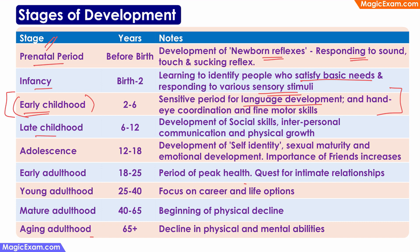In late childhood, the child starts to develop social skills and interpersonal skills, learning to interact with the people around them, and there is also a lot of physical growth. In adolescence, the child is developing a sense of self-identity, reaching sexual maturity, and experiencing significant emotional development. The importance of friends increases tremendously during adolescence, with the person seeking popularity, whereas in early adulthood the focus shifts to a quest for intimate relationships, which may be of a sexual or romantic nature.